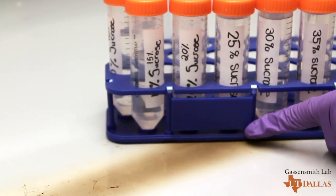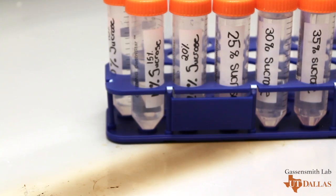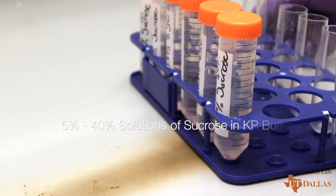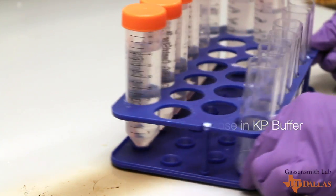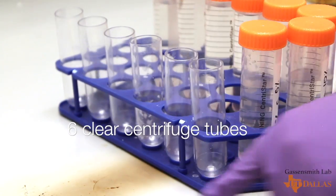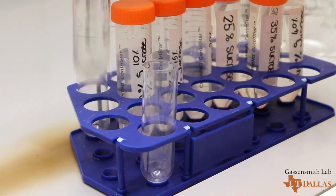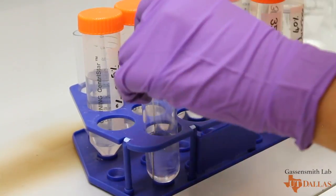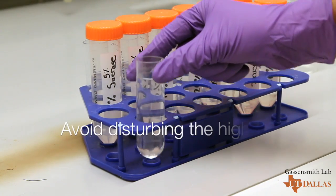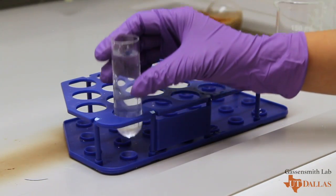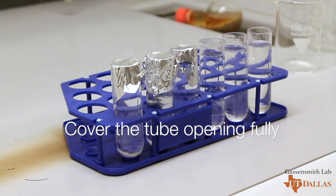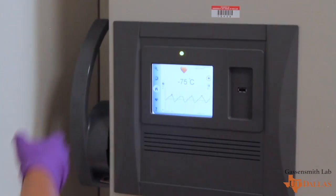Next, we'll be making sucrose gradients to use for the final purification step. These can be prepared days in advance. First, you'll need 5% through 40% solutions of sucrose dissolved in KP buffer. You'll also need 6 clear centrifuge tubes as shown. Fill each tube with approximately 3.4 milliliters of each concentration of gradient from the bottom up. Make sure to not disturb the layers as you do so. Once you have all 6 tubes ready, freeze and thaw the gradients 3 times before use.